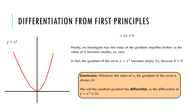What that tells me is that at any point along that curve the gradient of the curve is 2x, so I can use the differential and substitute in a value of x to find the gradient at any point I'm interested in. Let's say I want to know the gradient of the curve when x equals 4. I use the differential, substitute in my x value of 4, and that gives me 2 times 4. So the gradient of that curve when x is equal to 4 is equal to 8.